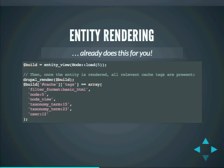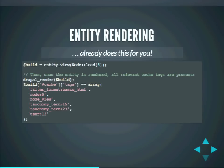A question from the audience: does this mean translations are picked up immediately? The answer is yes, because everything that is render cached is also varied per context it depends upon, including a translation context. For example, if node 5 were translated into English and Dutch, it would detect that there are multiple versions and vary the cached entries — so the English and Dutch versions would have separate cache entries.